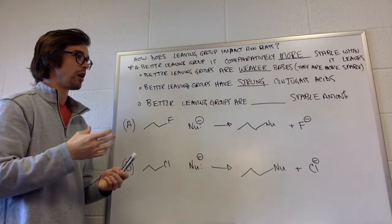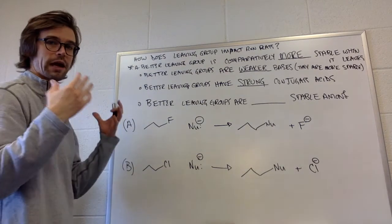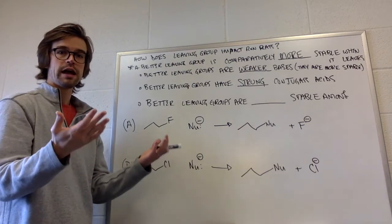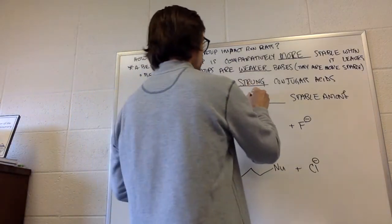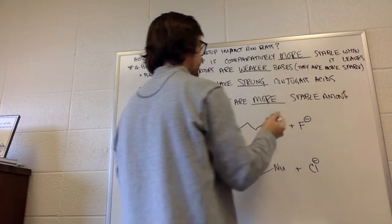Better leaving groups are blank stable anions. So when we're comparing two different anions, they're the more stable anion. Better leaving groups are more stable anions.